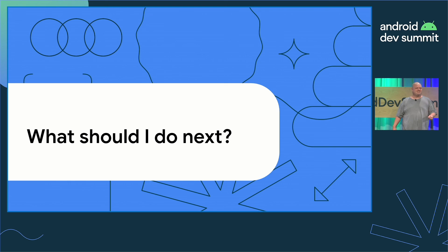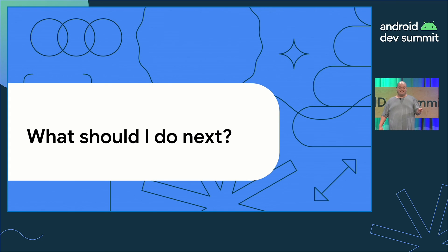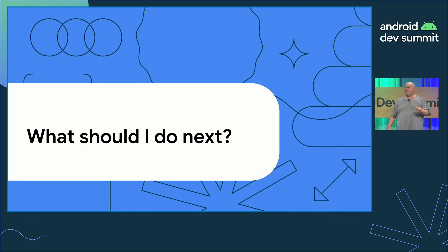The use cases we just discussed could all be solved by the Play Integrity API, and it's important to investigate how it could benefit your app's security. The Play Integrity API protects your apps and games from potentially risky and fraudulent interactions, allowing you to respond with appropriate actions to reduce attacks and abuse, such as fraud, cheating, and unauthorized access.